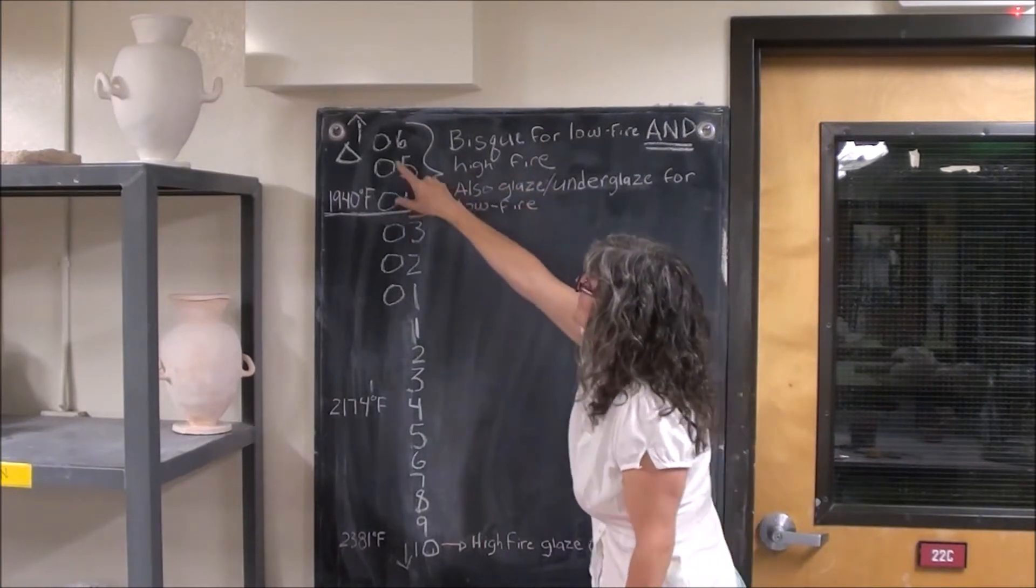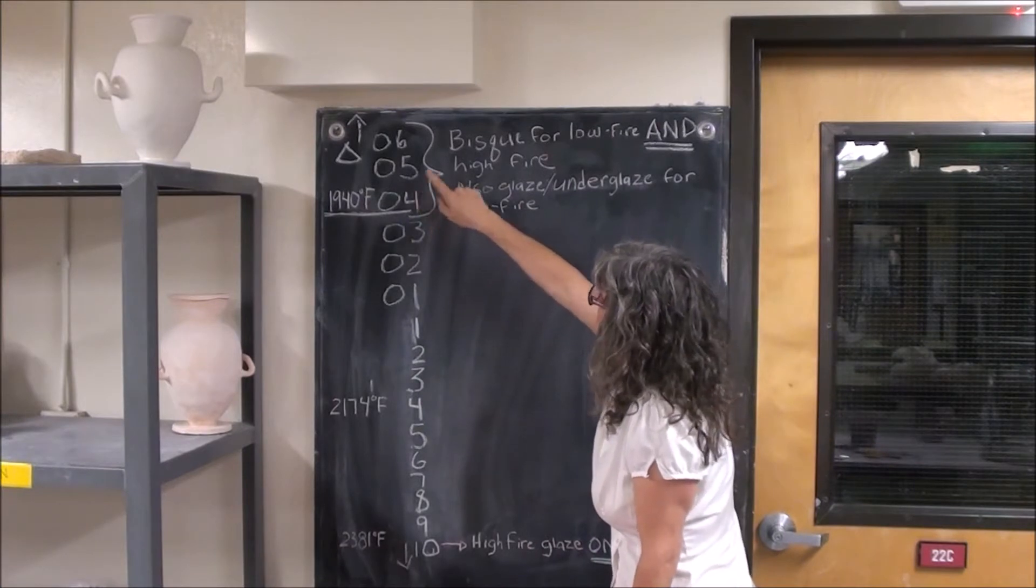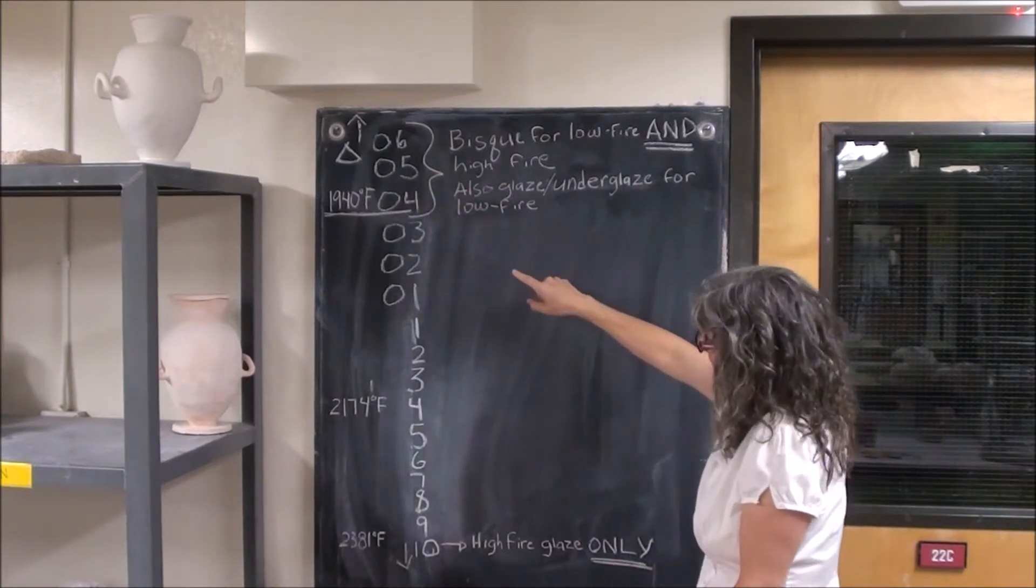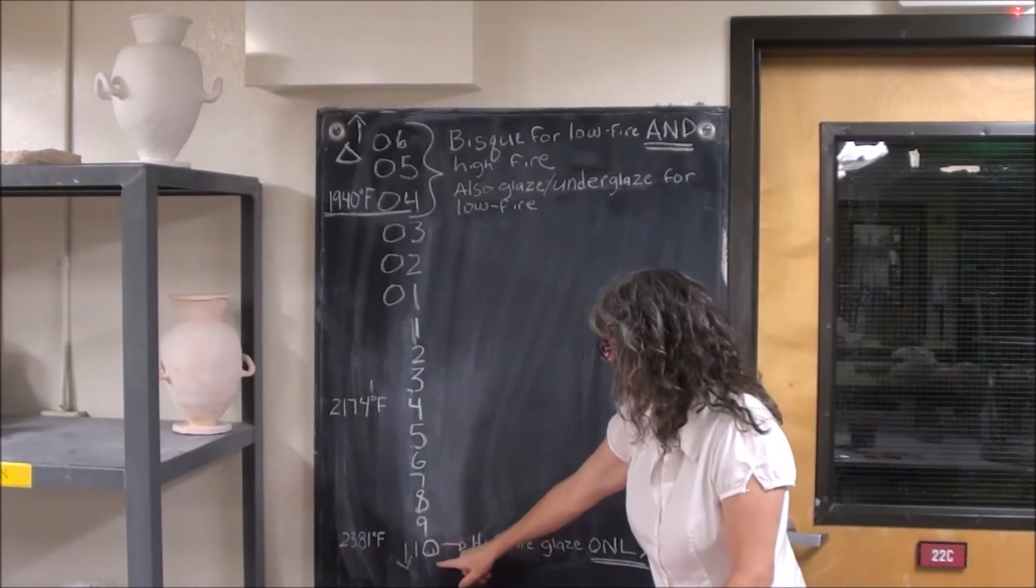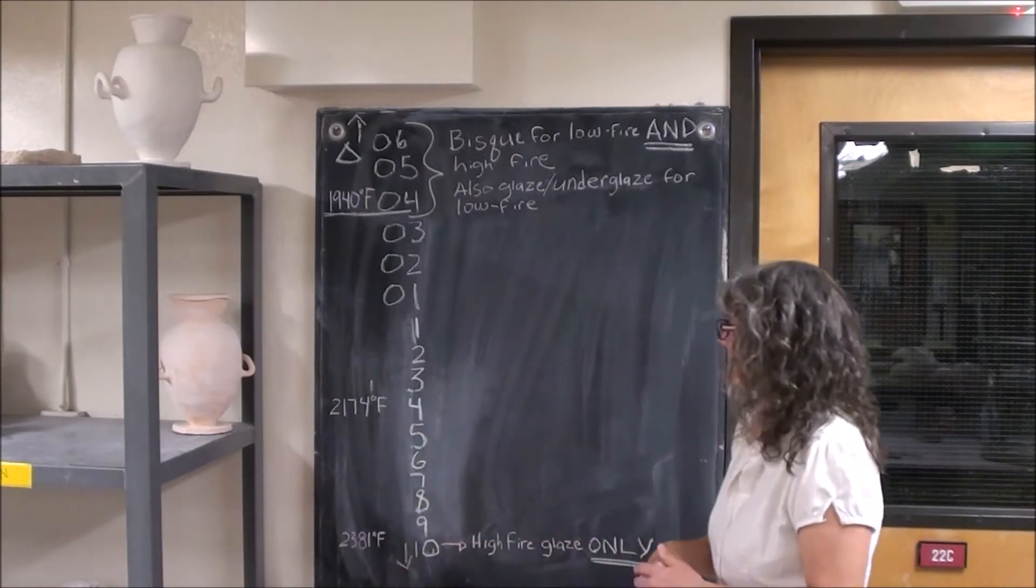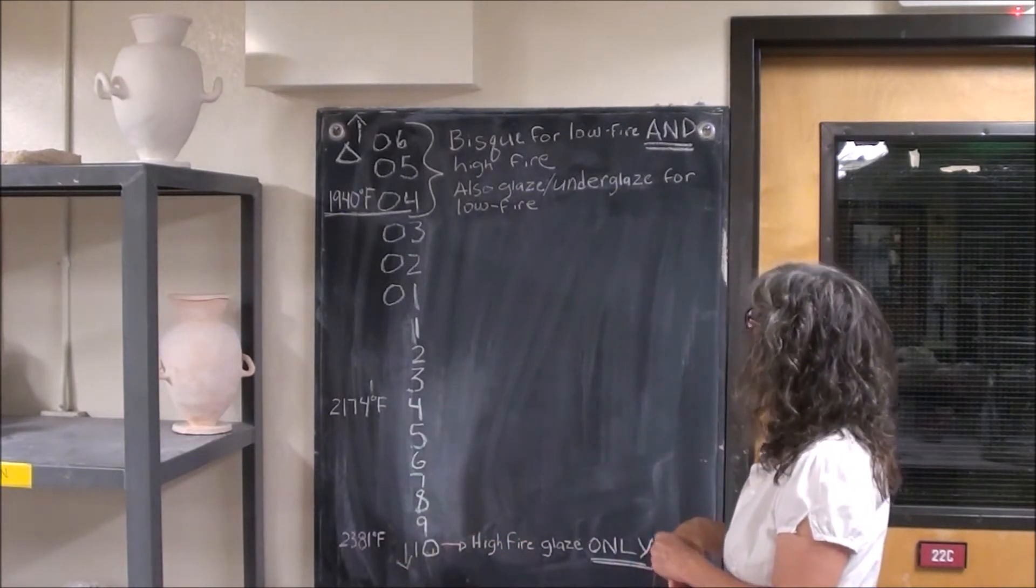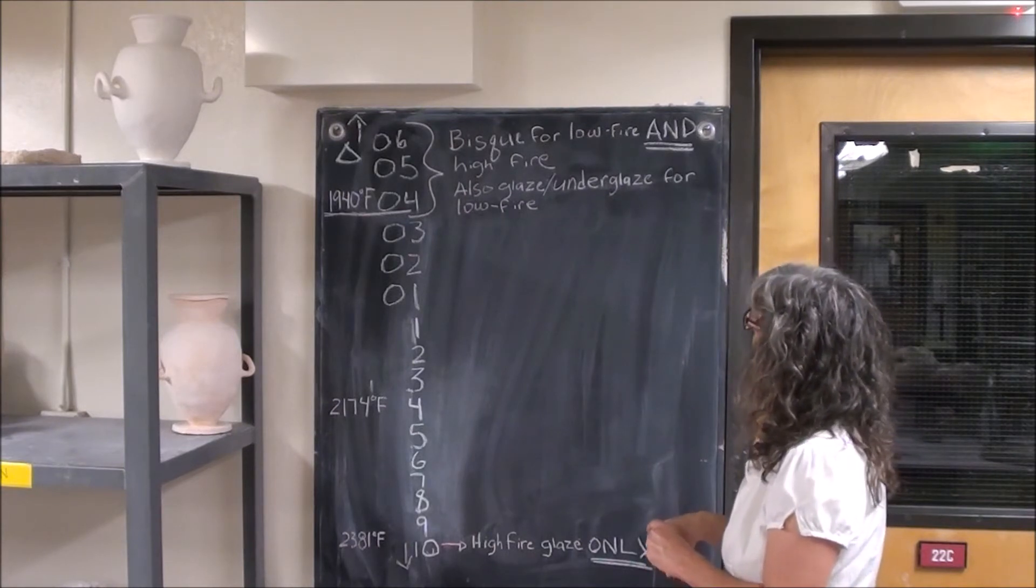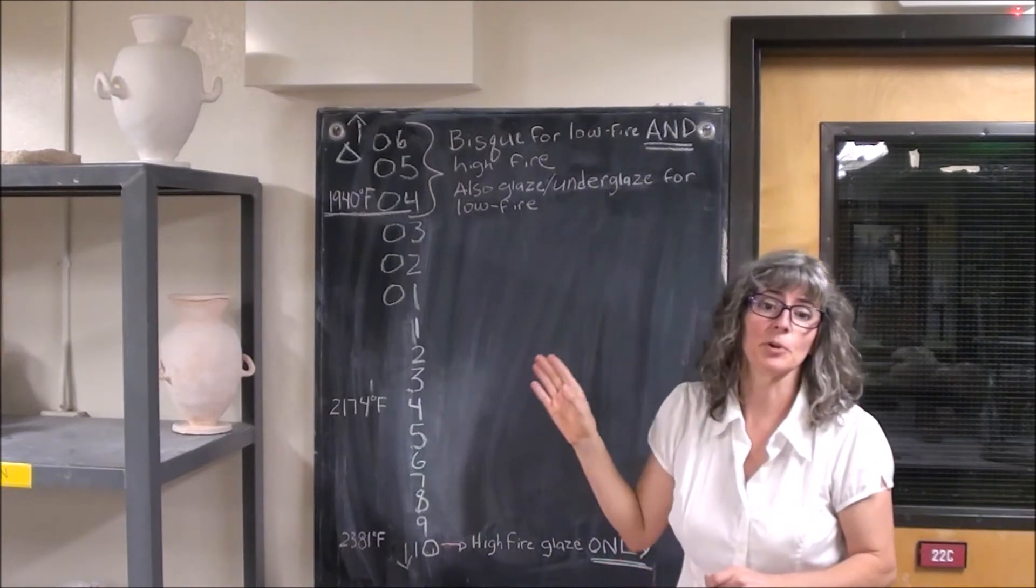Low fire is cone 06 to 04, that's the range we're working in. High fire is cone 10, which is 2381 degrees Fahrenheit. One thing to remember is that this is the same for every clay body.